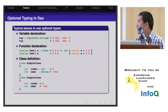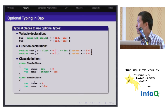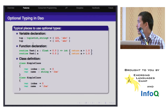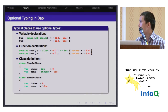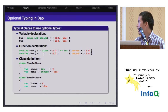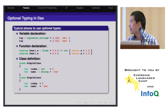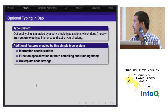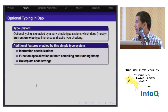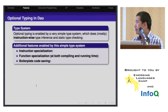For optional typing, this is quite straightforward. It's just some typical places where you can write types optionally. For variable declaration, you can write types or just omit them. Also for function parameters, you can specify types or omit them. For class definition, you can also specify types or just omit them. The type system that supports this optional typing is very simple - it's mostly instruction-based type inference, so there's not much to say, but I will mention some features enabled by this type system.